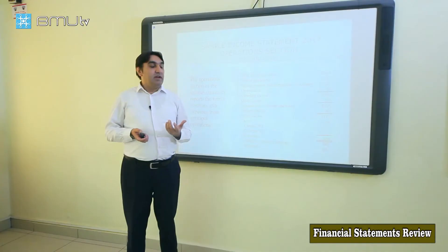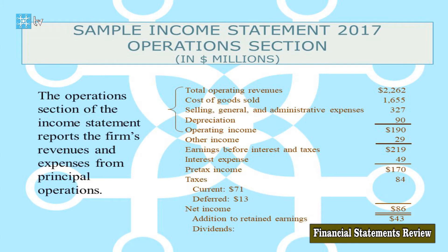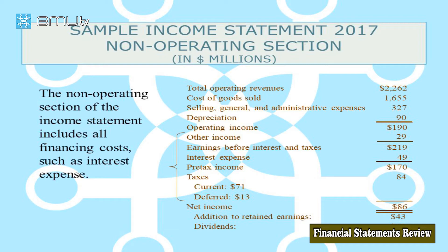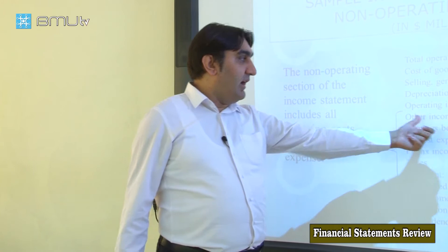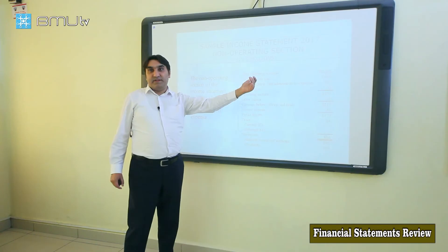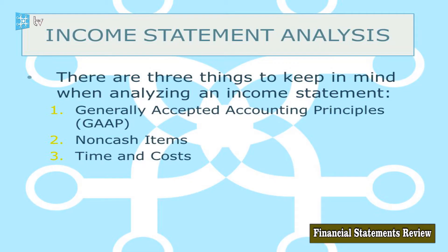The board of directors decides how to treat net income — it may be paid out as dividends or the company may retain it for future projects. The operations section covers the main business, and the company may also have income from non-operating sections, such as other income from financial or investing activities. Interest expense is due to financing and others.